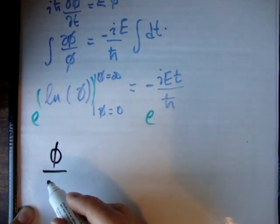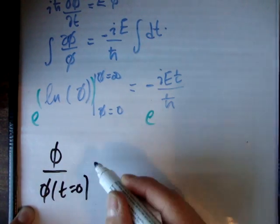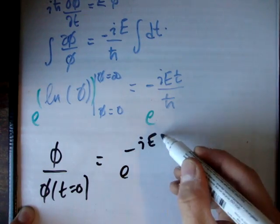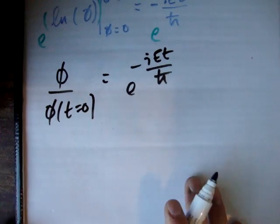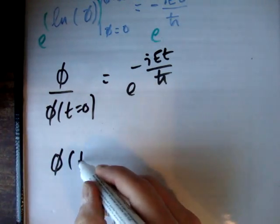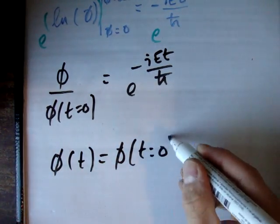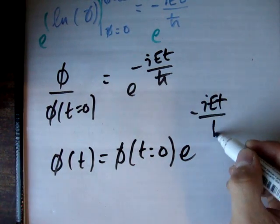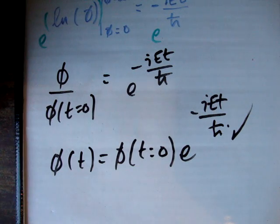What we're left with is phi over phi at t equals zero, equals e to the negative iEt over h-bar. And finally, phi at t equals phi at t equals zero, times that exponential. That's the solution to the temporal part — very straightforward.